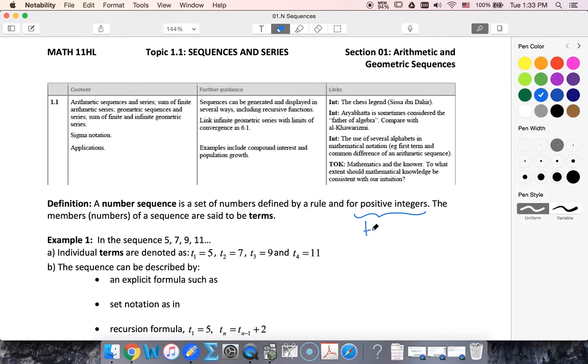So these positive integers end up being our term numbers, which we're going to use with the variable n. So it's not saying that we have to only have positive integers to make a sequence. We could have positive, negative, rational, irrational. But our term numbers, the terms we're discussing, those are going to be positive integers.